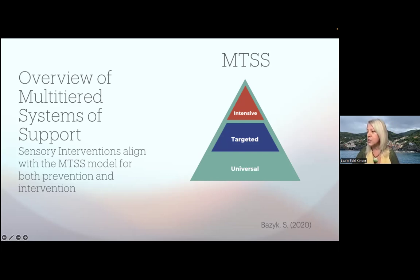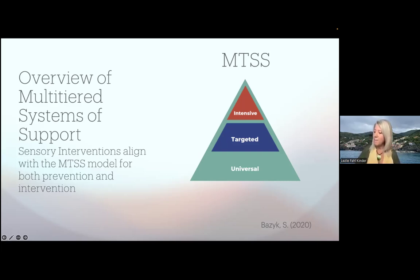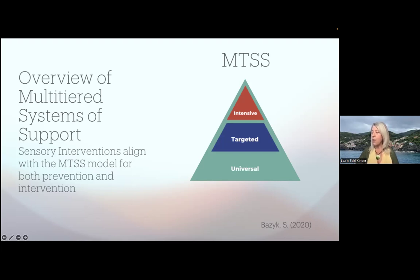Tier one at the bottom represents universal supports for all students through high-quality instruction and proactive classroom management. Tier two, in the middle, are targeted interventions for smaller groups of students that might need additional help. Tier three represents more intensive or individualized supports for students with significant needs, often involving more one-on-one interventions. The framework emphasizes data-driven decision making and collaborating with educators, with the goal to ensure all students receive appropriate support not only academically, but also socially and behaviorally.